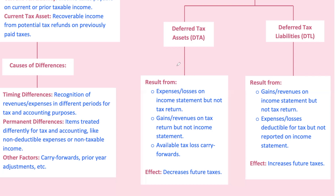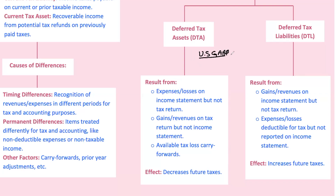Now, there are some important considerations. Under both IFRS and US GAAP, deferred tax assets are recognized only if it's probable that future taxable profits will be available to utilize the asset — meaning the company is expected to continue as a going concern. If the company's future is shaky, we can't just assume these deferred tax assets or liabilities will pan out. Under US GAAP, if there's uncertainty about recovering a deferred tax asset, a valuation allowance is used to reduce its value on the balance sheet.